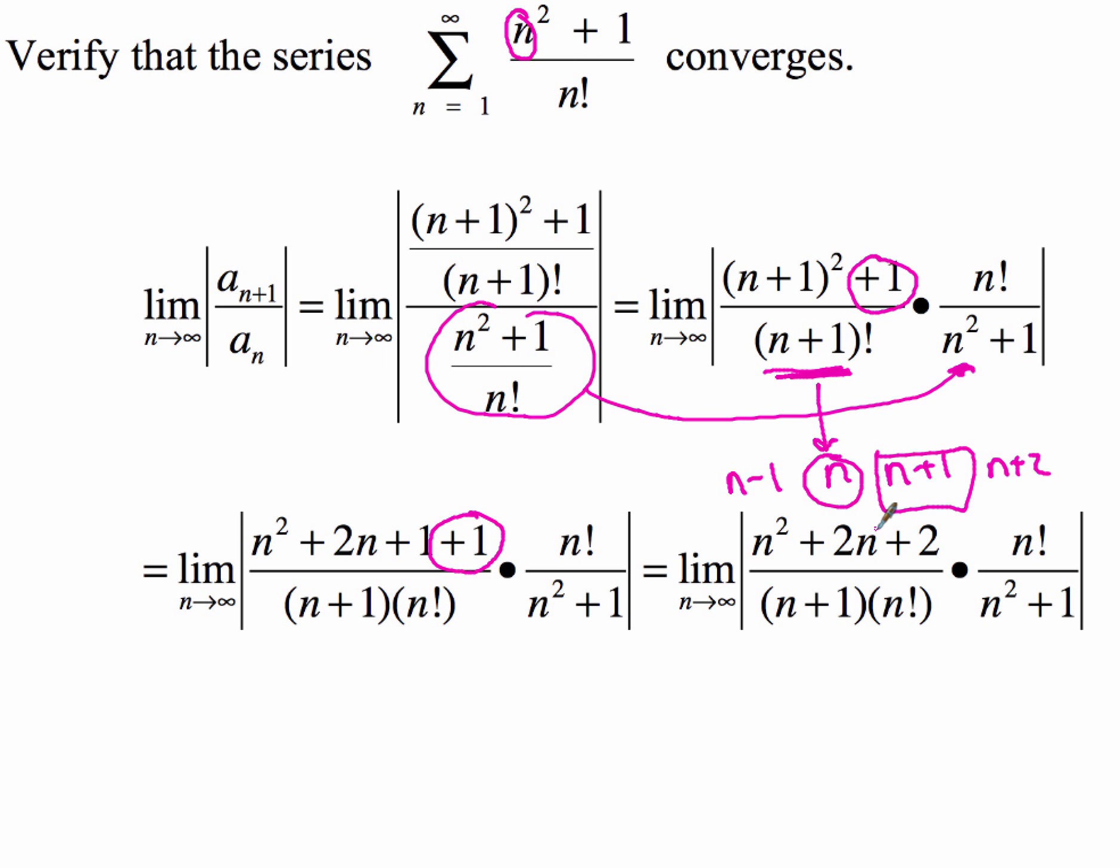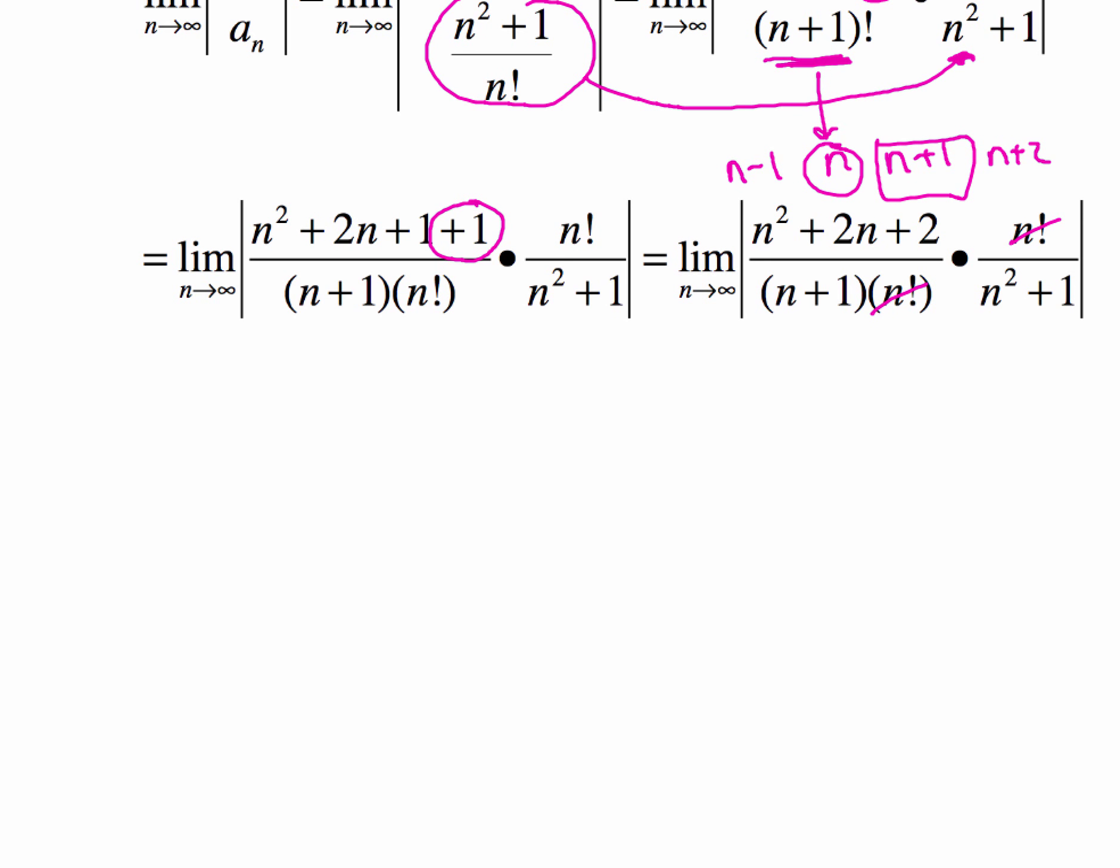And why do we do that? Because then our n factorials will cancel out. So that's much nicer. Now from here, as we start kind of working through this, let me give you a little bit more room here. So when we start looking at this, now we're going to go ahead and clean everything up a little bit more.